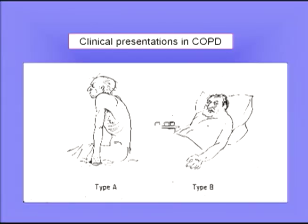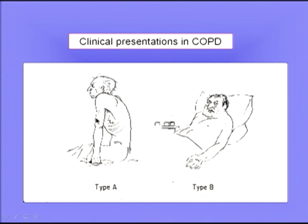Now let's look at the Type B presentation — a very different kind of person. This man probably has a long history of cigarette smoking and severe chronic bronchitis. He is coughing up phlegm all the time. He's not nearly as short of breath as the Type A patient, but he is blue and cyanotic. His blood gases are very abnormal — he has a much lower PO2 and likely an increased PCO2, sometimes called respiratory failure. He also has evidence of right heart failure: increased pulmonary artery pressure, pulmonary hypertension, and the triad of engorged neck veins, palpable liver, and peripheral edema.